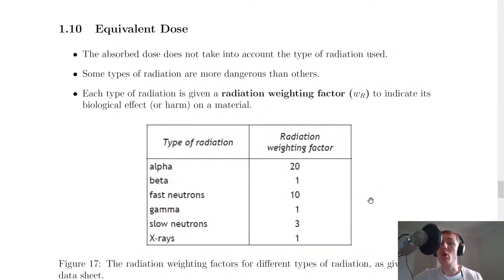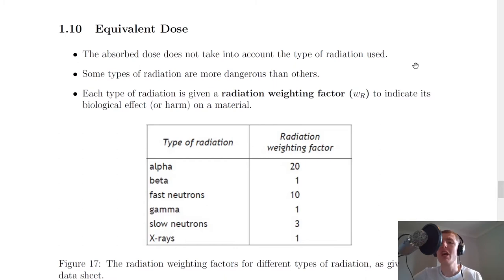In the theory video for absorbed dose, we saw that the equation D equals E over m only took into account the mass of the material or tissue that is absorbing the radiation, but it didn't actually take into account the type of tissue. It's also the case that the absorbed dose does not take into account the type of radiation used.